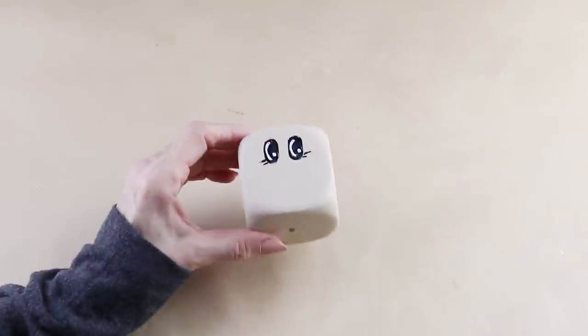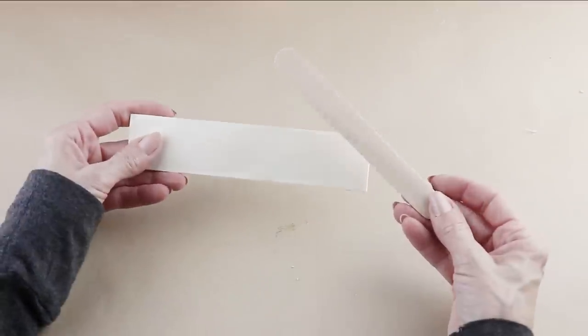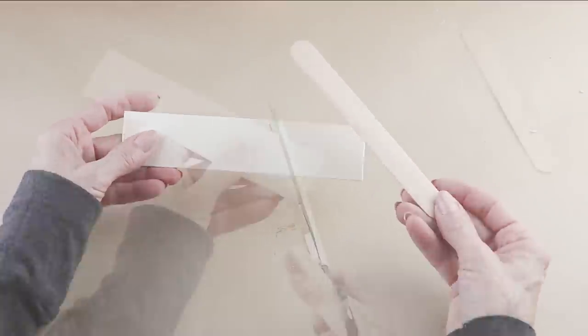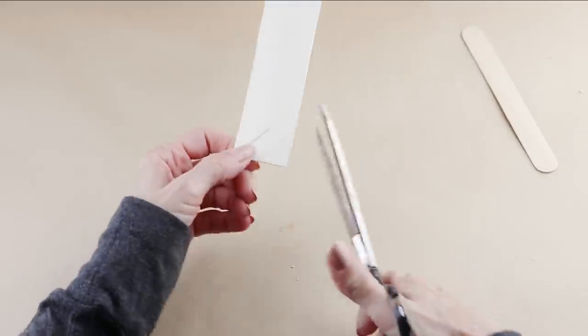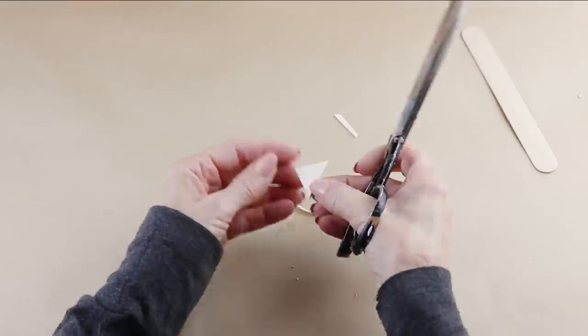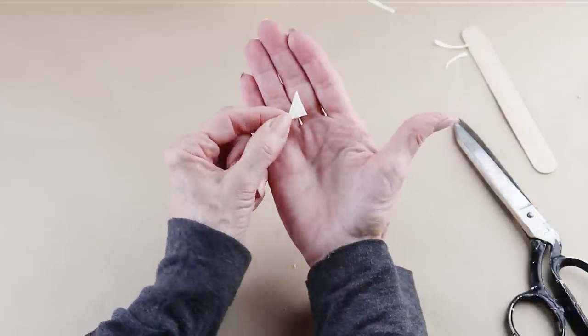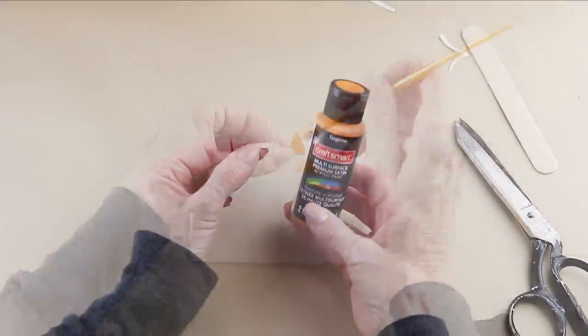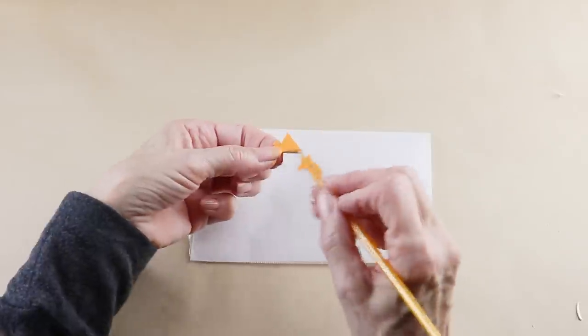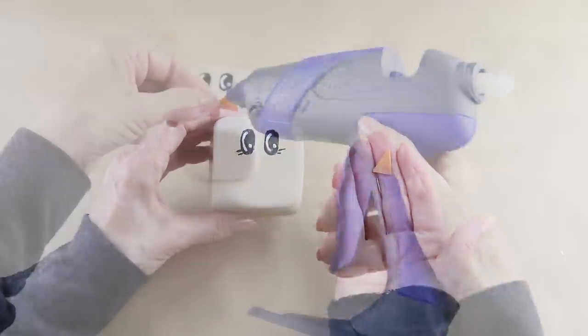For my scarecrow's nose, I'm using a thin piece of wood, and you can always use a craft stick. All I'm doing is cutting out a small triangle. Now that I'm happy with the size, I'm giving it a coat of orange acrylic paint. Now that it's dry, to attach it, I'm using some hot glue.